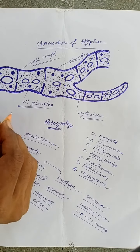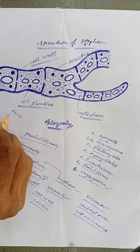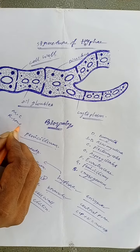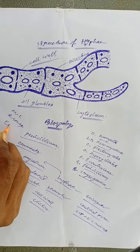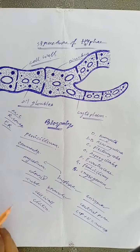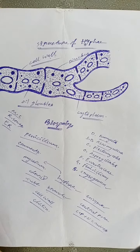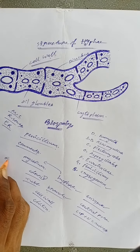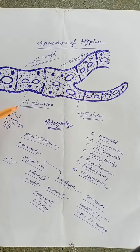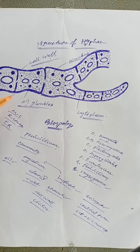The reserve food is present in the form of oil globules. So in this way, these are the identification characters of Penicillium. Thank you.